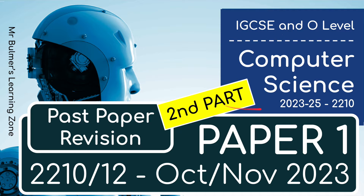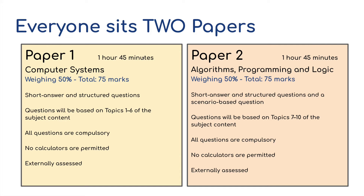Hello and welcome back to the second part of this O-Level Computer Science paper. This is paper 1 from October-November 2023. Those people doing the O-Level are going to be sitting two papers. This is paper 1: 50% of the final mark, 75 marks in total, 1 hour and 45 minutes. All questions are compulsory, you are not allowed to use a calculator, and this will be externally assessed. Paper 2 is weighted the same way and for the same marks, but paper 1 generally comes first in the exam calendar.